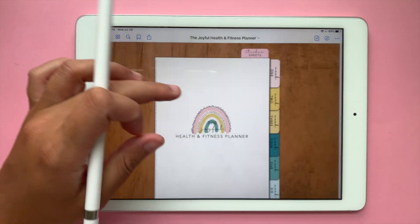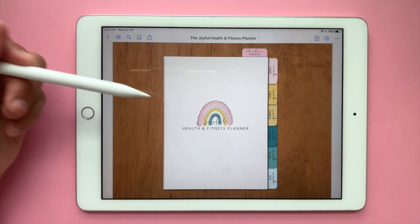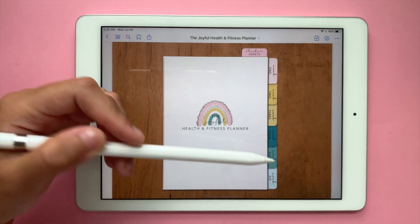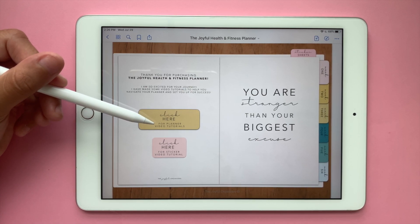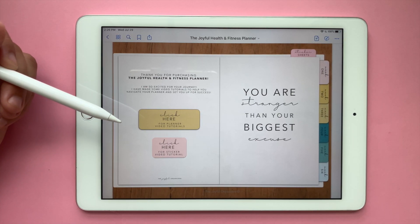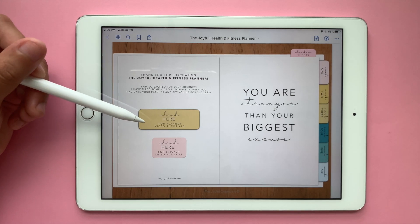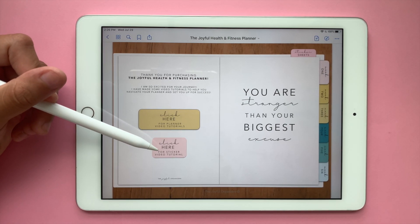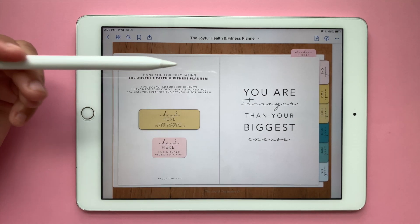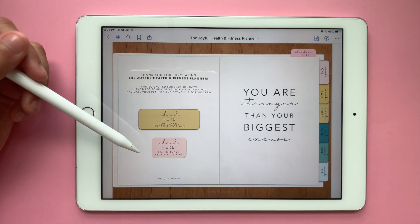The first thing you're going to see is this cute cover page with all your tabs. You're going to swipe and if you click here, you're going to be taken to my digital planning video tutorials playlist. And if you click here, it's going to take you to the sticker video tutorial on how to use your sticker sheets.